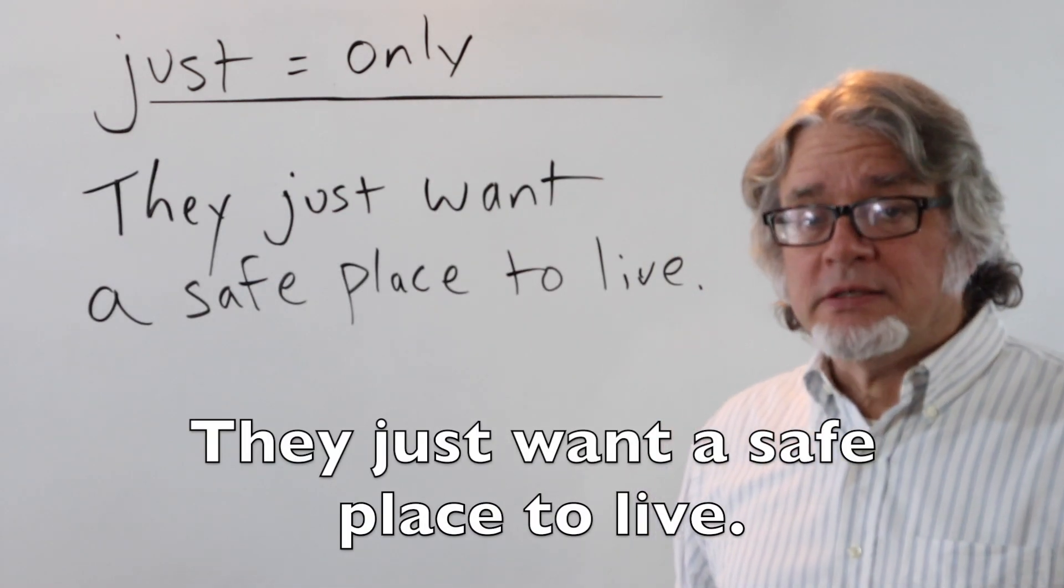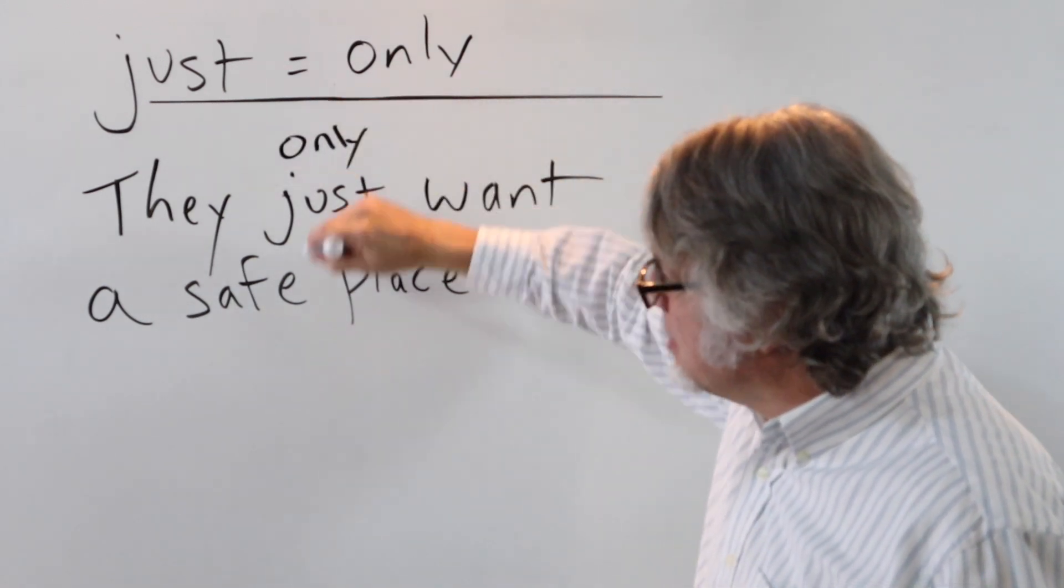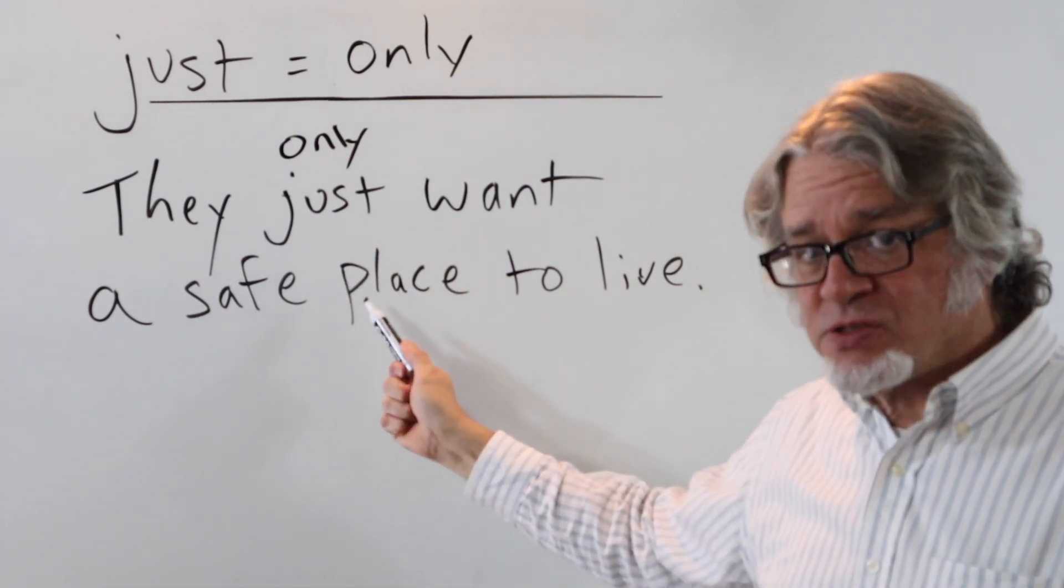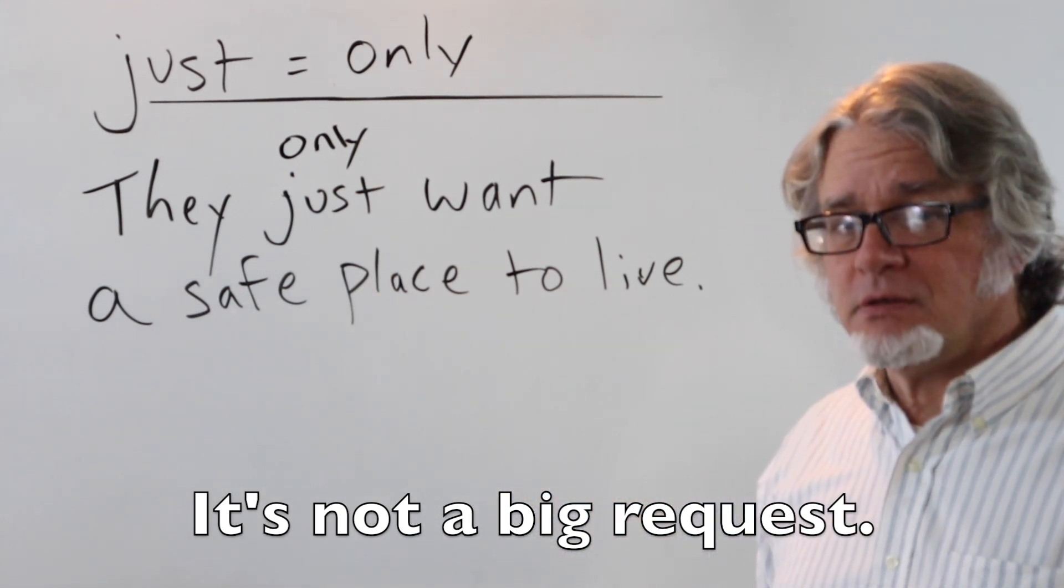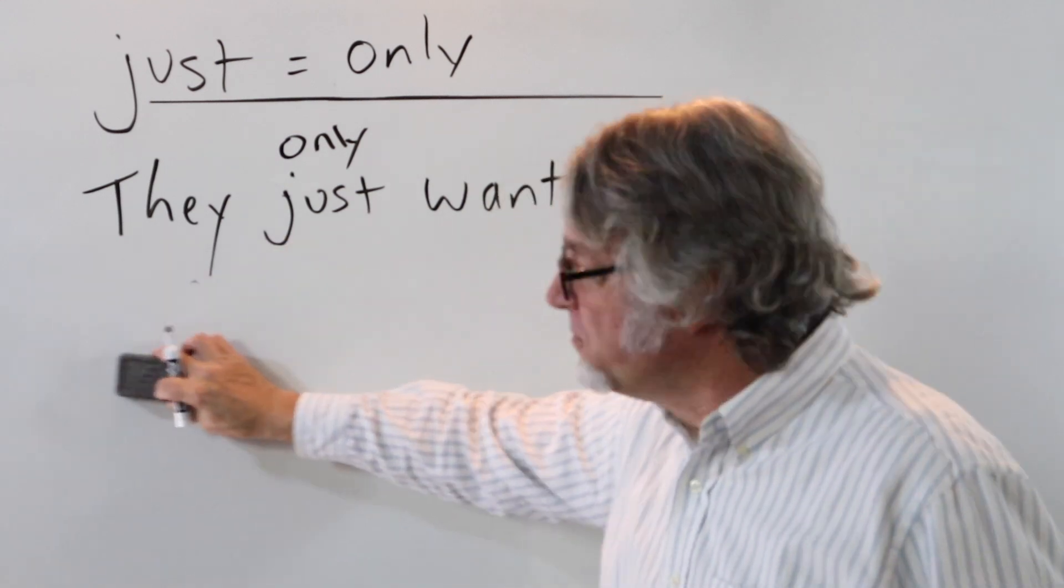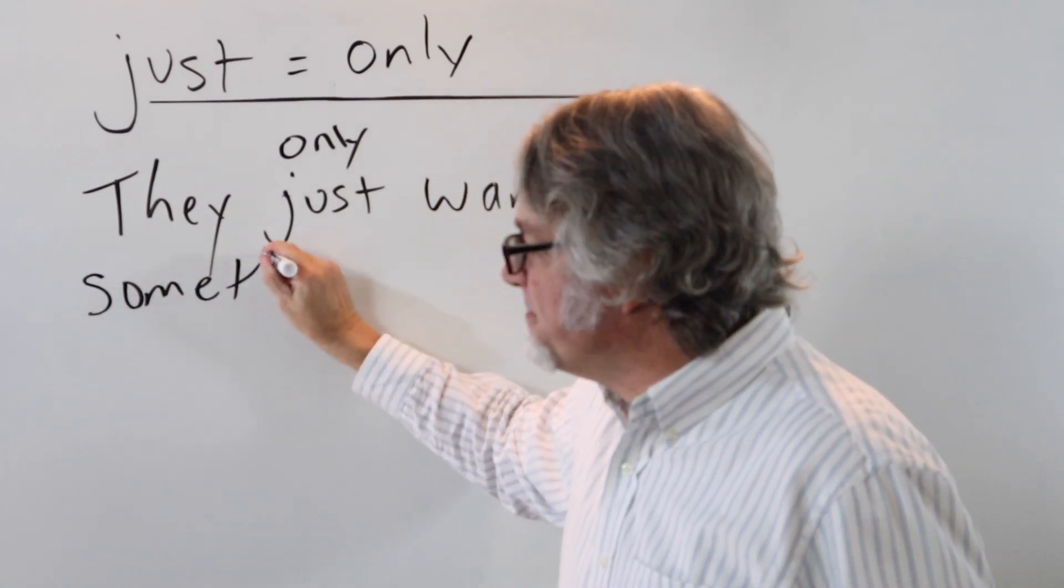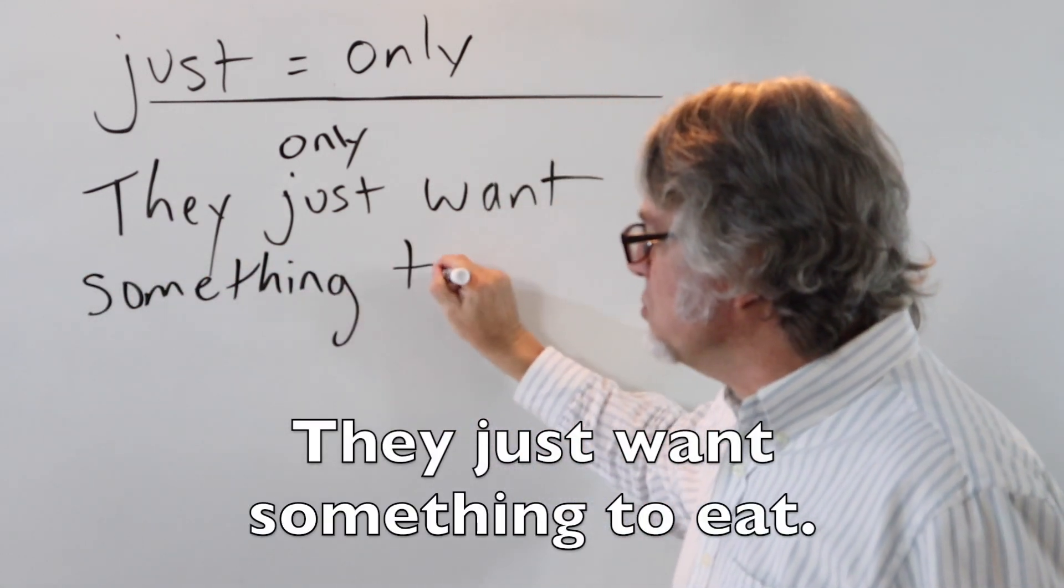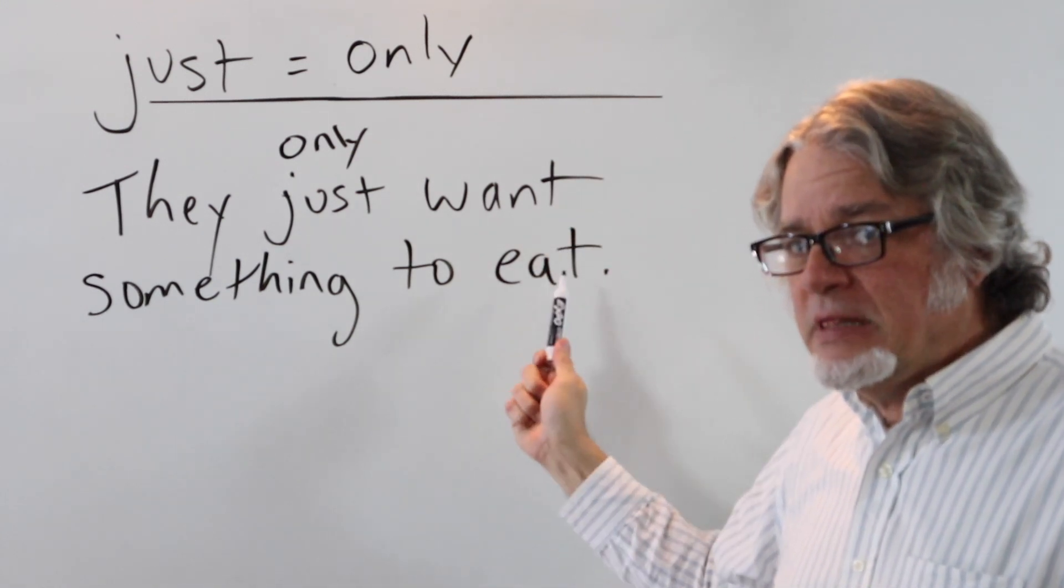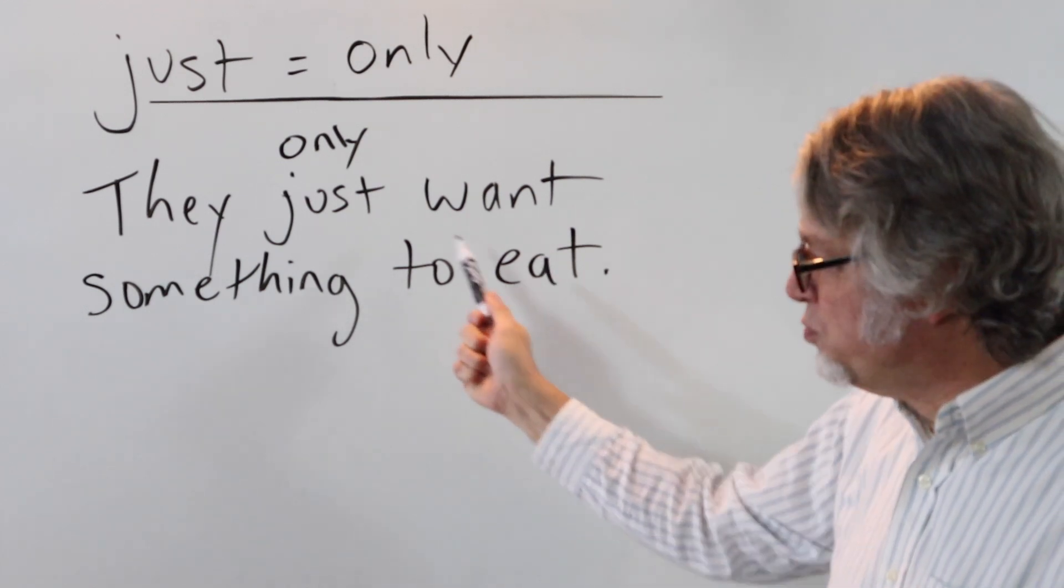They just want a safe place to live. They only want a safe place to live. This is not too much to ask for. It's not a big request. You can also say for food, they just want something to eat. It's not a big problem. It's not difficult to provide this.